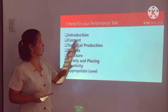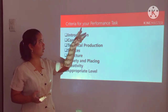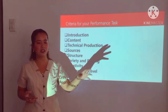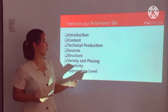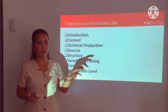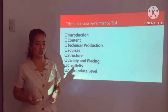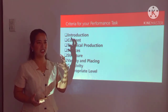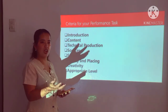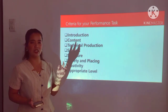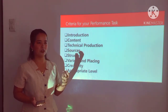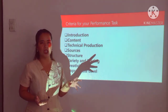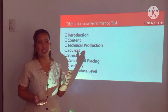Here is the criteria for your performance task. You need to look at the introduction, then the content, and then technical production — which covers camera angles, sound effects, and how you shoot the video. Another criterion is sources — the information sources used in the story. Then structure, meaning the arrangement of the scenes. Variety and placing is about the different ways you present the scenes. Creativity is about sound effects, how appropriate they are, and how creative you are with props and presentation.